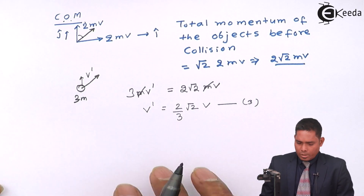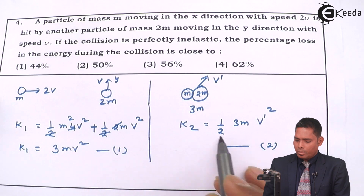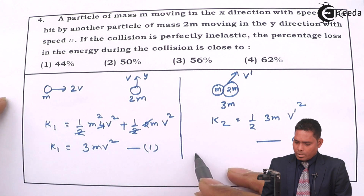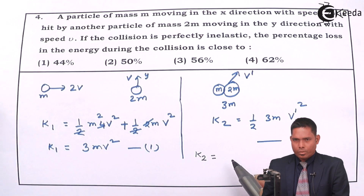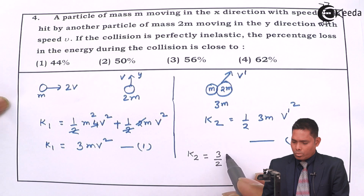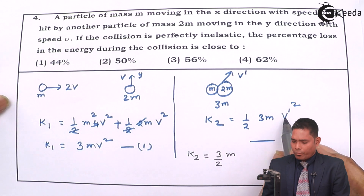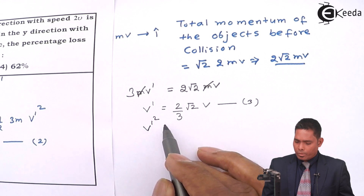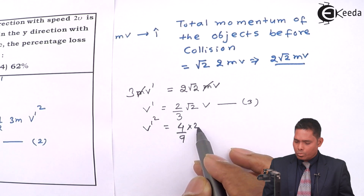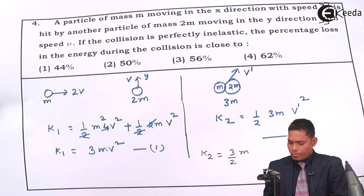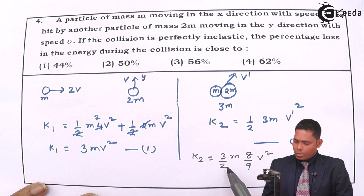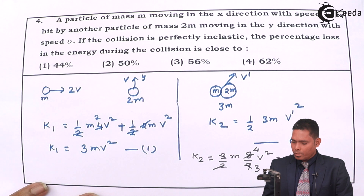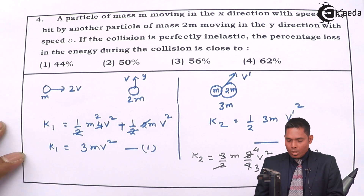Now substituting v' into equation two: K2 = ½ × 3m × v'². Since v'² = (2√2/3)² × v² = 8/9 × v², we get K2 = ½ × 3m × 8/9 × v² = (4/3)mv².